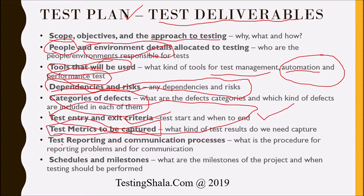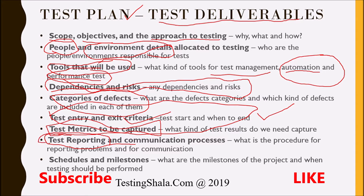The next item is test reporting and communication process. For test reporting, we clearly define the daily status report and weekly status report — what are the different parameters we are going to report to the stakeholders. Those things will be clearly documented in the test reporting section.